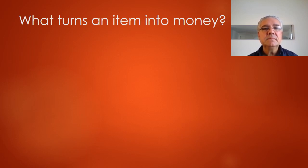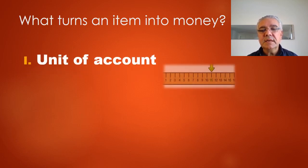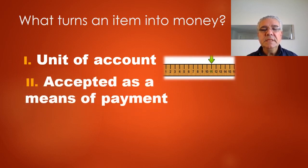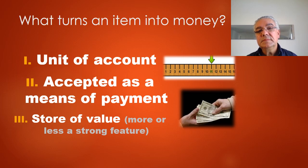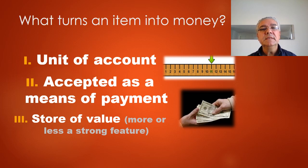Money has particular characteristics which economists define: it has to be a unit of account — that is, a benchmark or reference. It must be accepted as a means of transaction or payment. It also has the characteristic of being a more or less good store of value. For example, wheat has been used as money, but wheat is perishable and would rot if not stored properly, so the value would be lost. Gold is supposed to be the ultimate store of value.